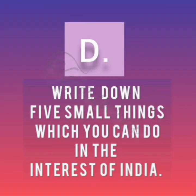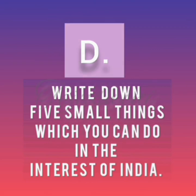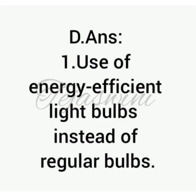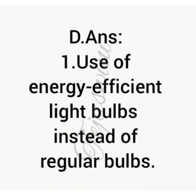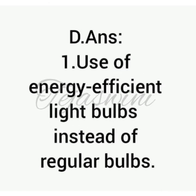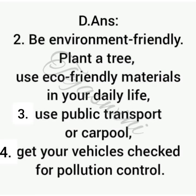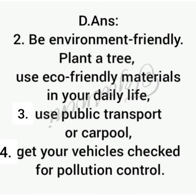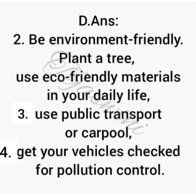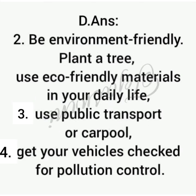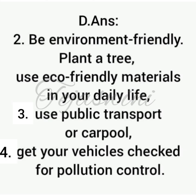Task D: Write down 5 small things which you can do in the interest of India. For example, not throwing empty wrappers on the road. 1. Use energy efficient light bulbs instead of regular bulbs. 2. Plant trees or use eco-friendly materials in our daily life. 3. Use public transport or carpool.